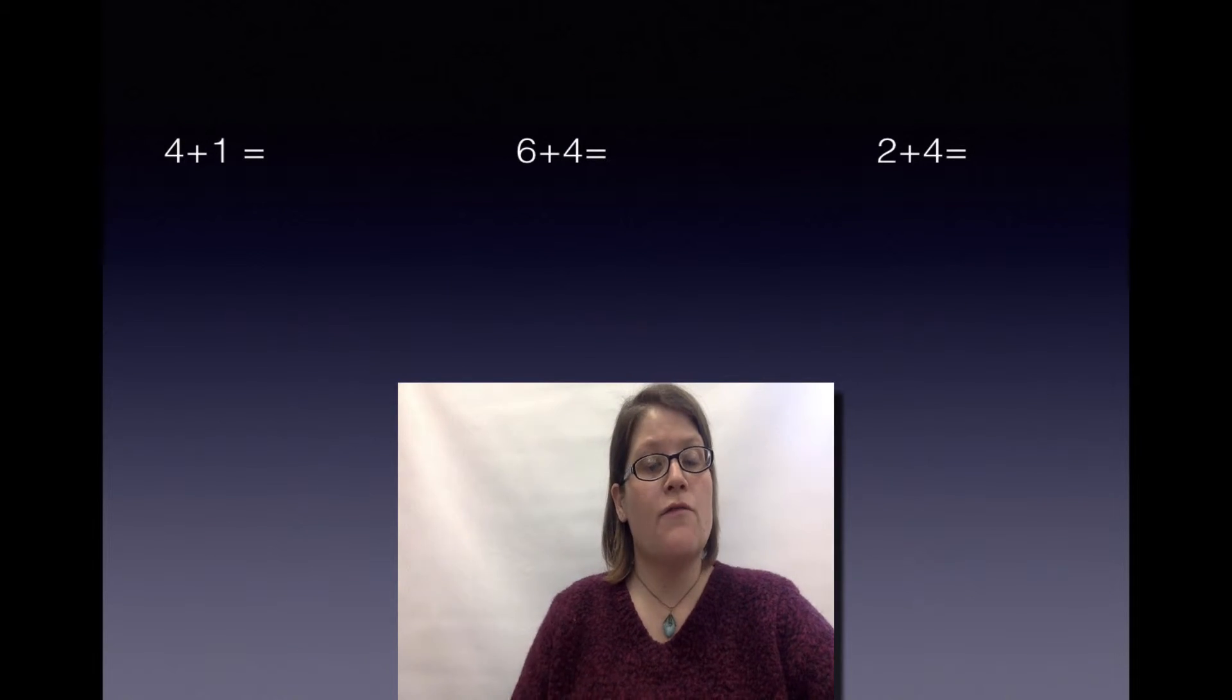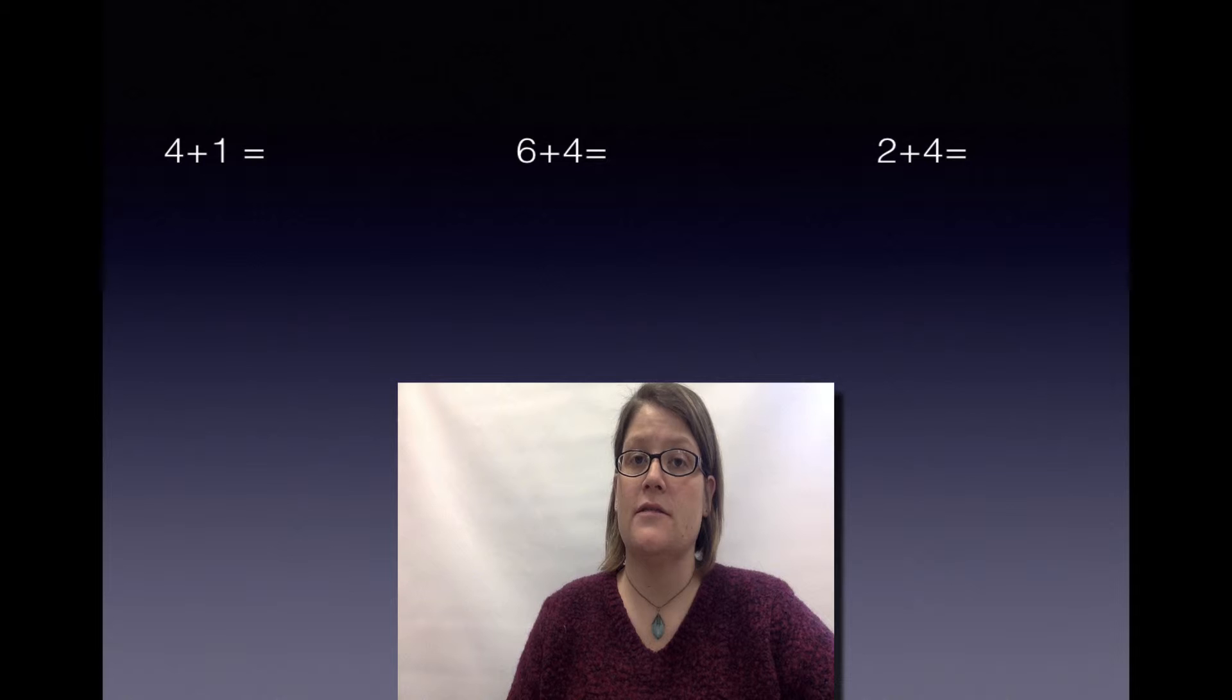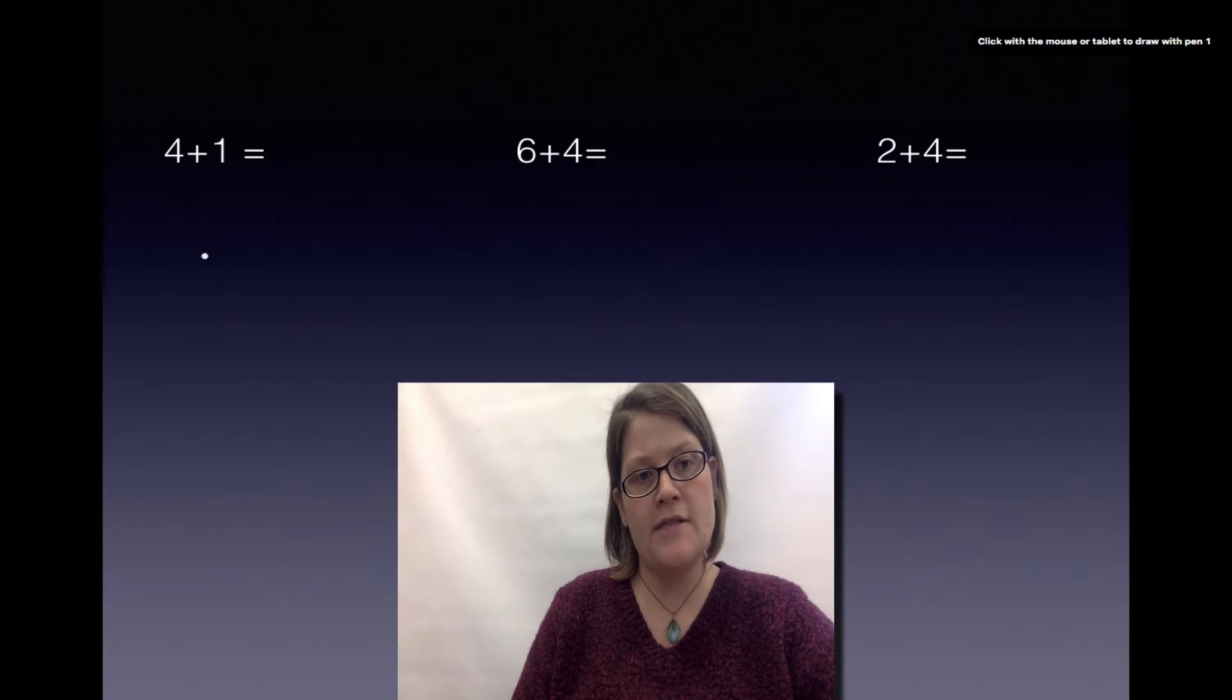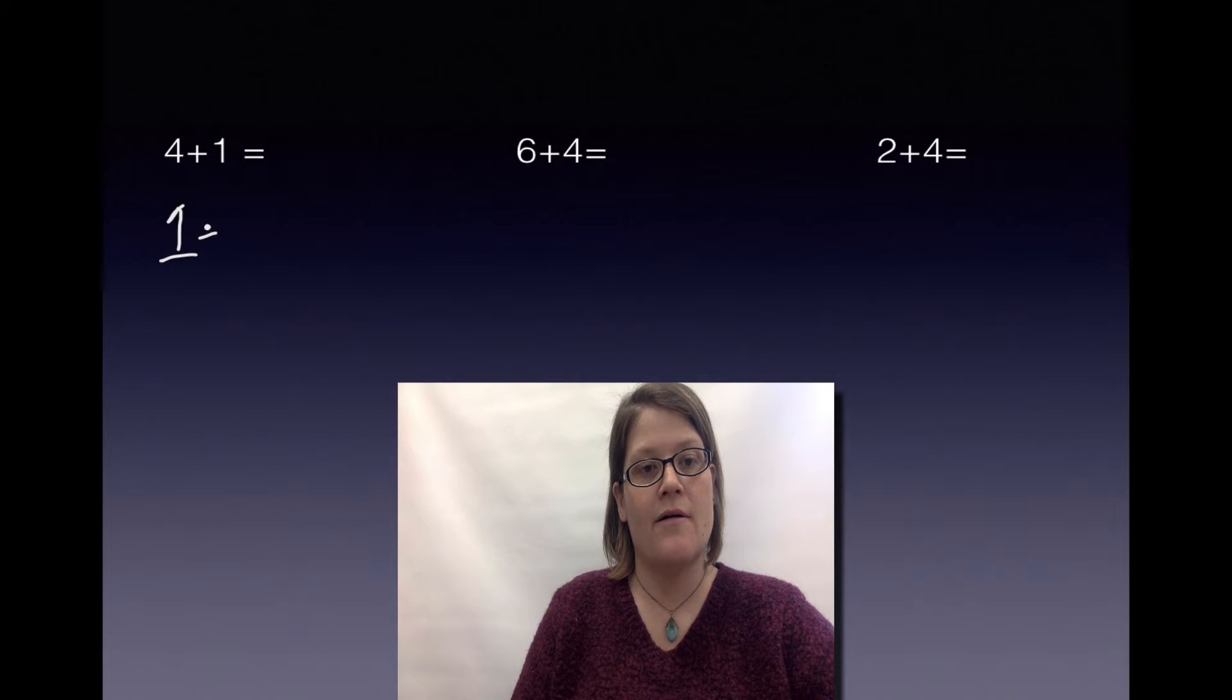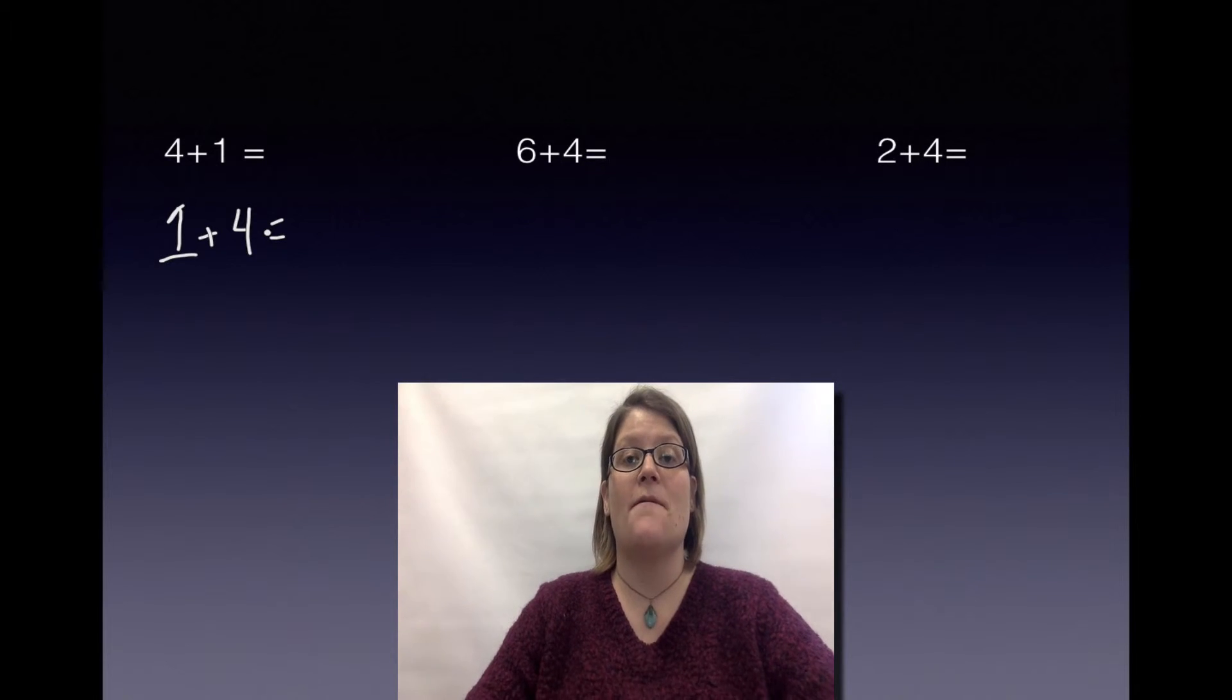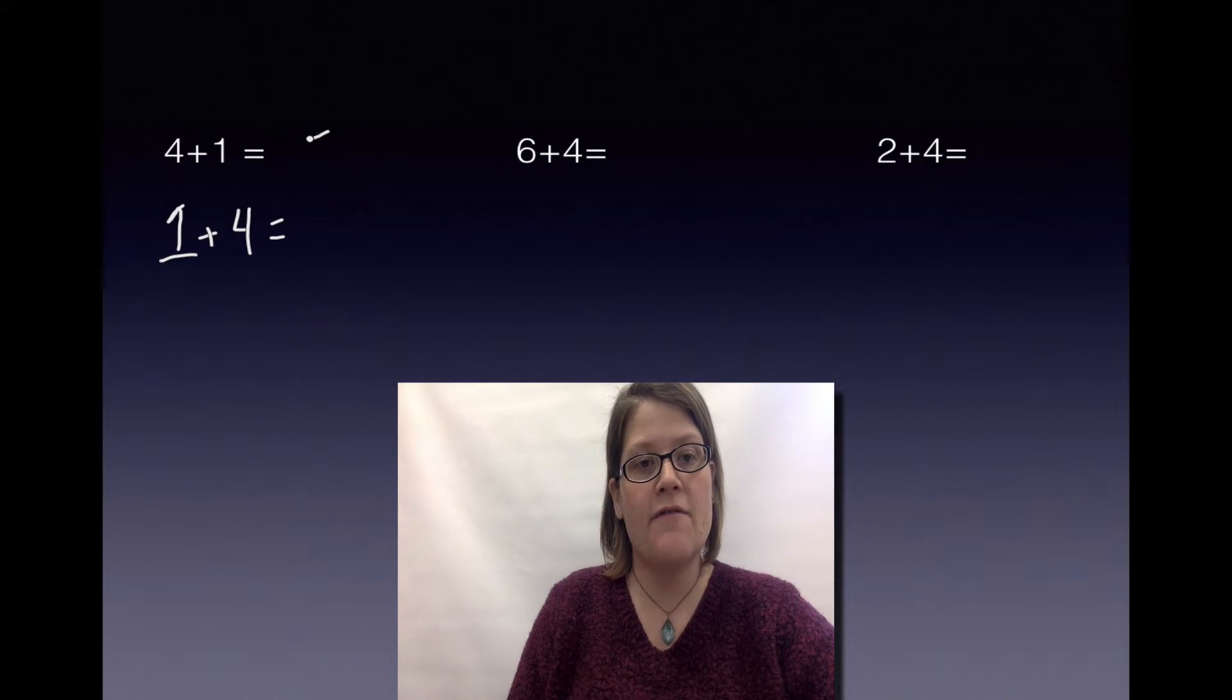Your turn. The 4 and the 1 are called what? Yeah, addends. And according to the commutative property, what can you do to those addends? You can change the order. Well, let's do that. If it's 4 plus 1, it's now going to be, yeah, 1 plus 4. But according to that property, what's going to happen to that sum? It's going to stay the same. So if 4 plus 1 is 5, then 1 plus 4 is also 5.